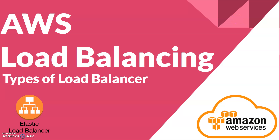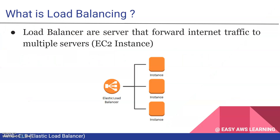Hello friends, welcome back. In this session we will see the AWS load balancing overview and the types of load balancer supported by AWS. So first question: what is load balancing? Load balancers are servers that forward internet traffic to multiple instances available under the load balancer. As you can see in this image, the load balancer is configured in between the user and the instance where your application is deployed.